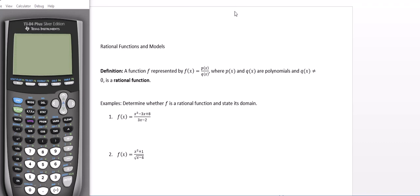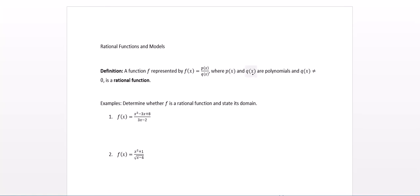Hello, and welcome to Rational Functions and Models. Let's start with a definition. A function f, represented by f of x equals p of x over q of x, where p of x and q of x are polynomials, and q of x is not the zero polynomial, is called a rational function.